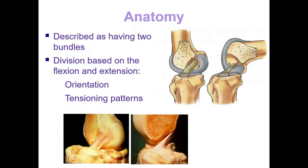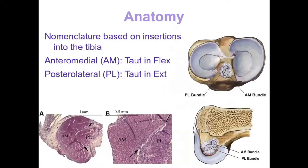The ACL is conventionally described as being formed of two bundles — anteromedial and posterolateral — divided and defined based upon their attachment points into the tibial footprints. Other concepts have evolved, including the ribbon or band theory of ACL function and architecture. Histological sections demonstrate the C-shaped cross-sectional profile of the anteromedial bundle with a more diminutive posterolateral bundle sitting beside it.